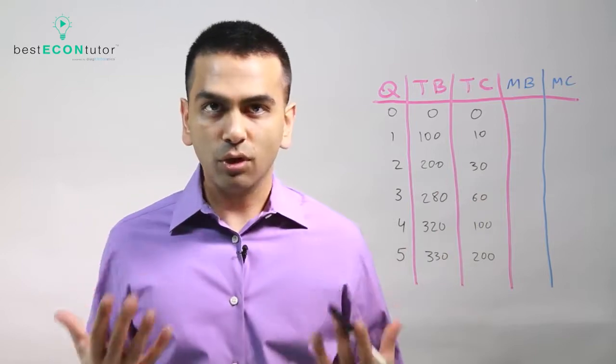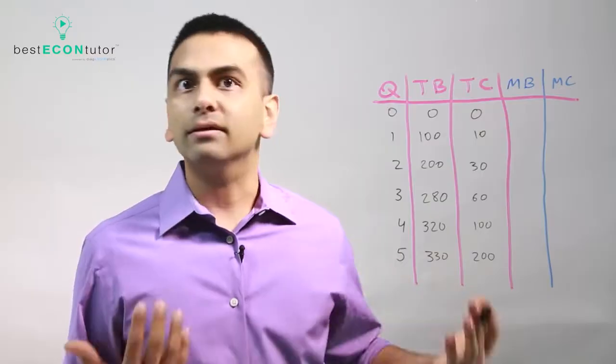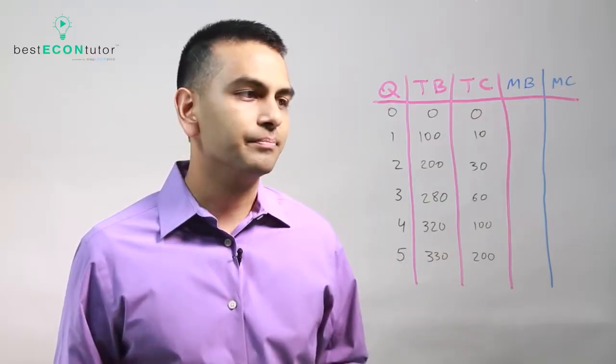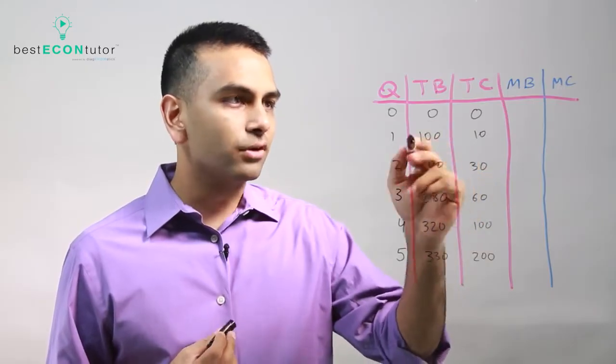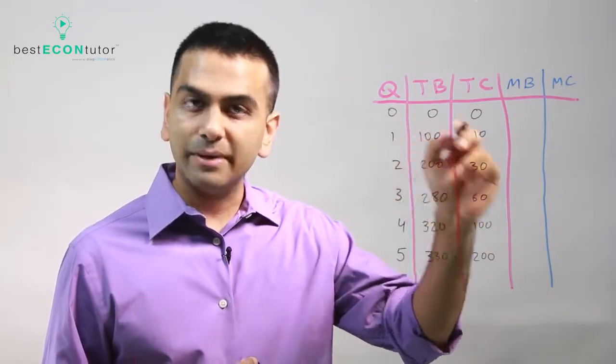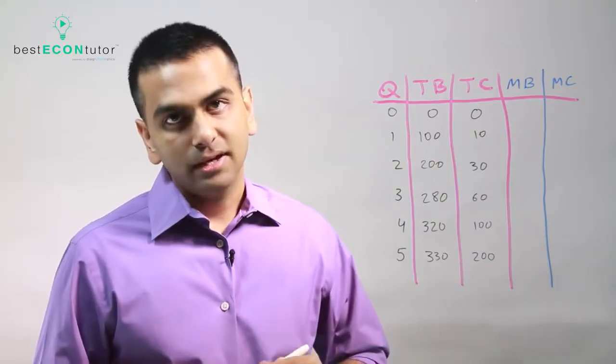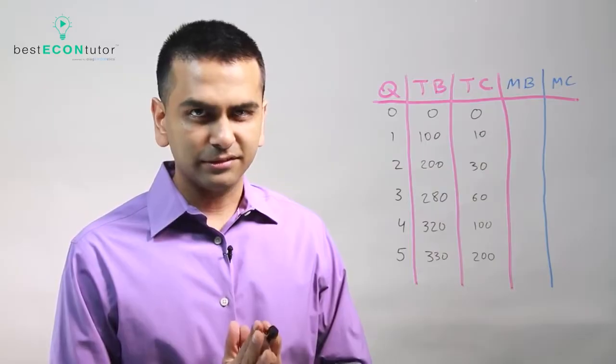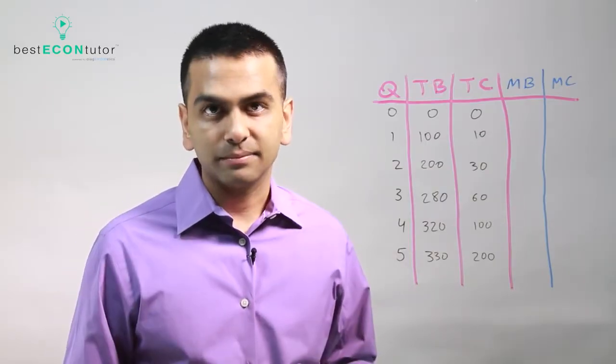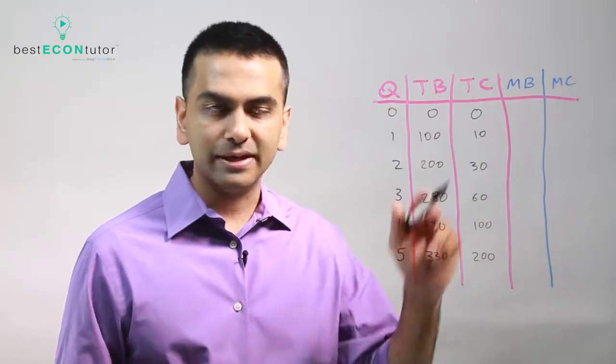Your goal is to have your total benefit be as much higher than the cost as possible. So looking at this, we could go through everyone and find your benefit minus your cost for every single one to see where that's the highest. That's one way you can verify your answer, but as you'll see it becomes much more efficient if you look at the marginal values instead of the total values.